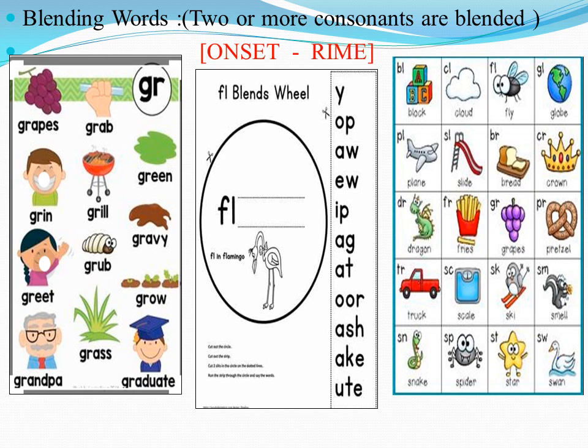In the first stage, you can read the blending words — the consonant blends. GR, FL, BL, CL, FL. When you say them: gr, fla, bla, cl, fla, gla, pla, fla, bra, kra.